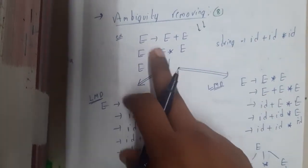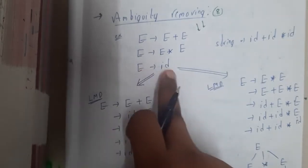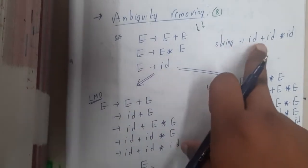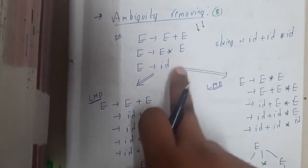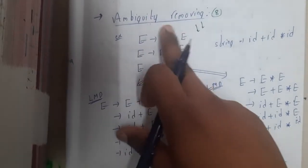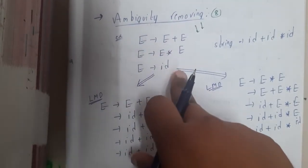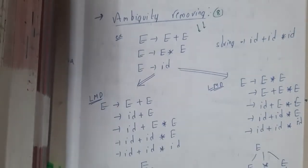So, E implies E+E, E implies E×E, E implies id. The string is id+id×id. If you observe, just by observing you can say that there is a high chance of ambiguity here, right?